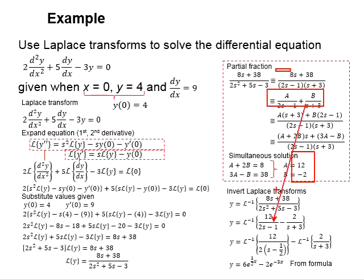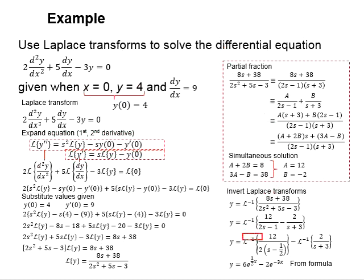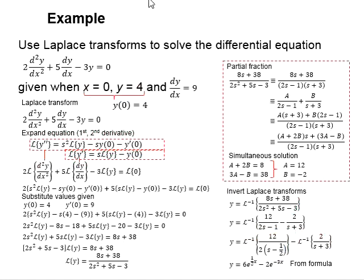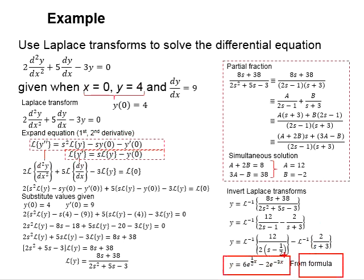Substitute the relevant values A equals 12 and B equals negative 2 into the function to obtain the separated partial fractions. Next, apply the inverse Laplace transform to each separate function by referring to the tables of Laplace transform, and you will arrive at your final answer.